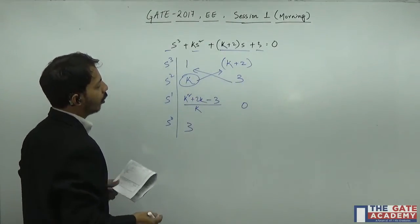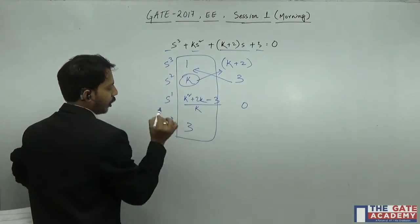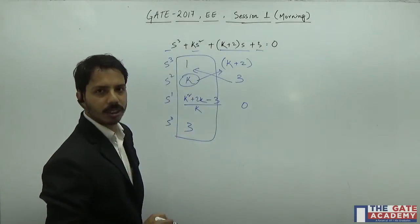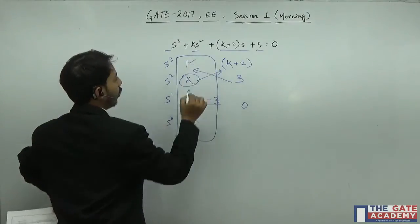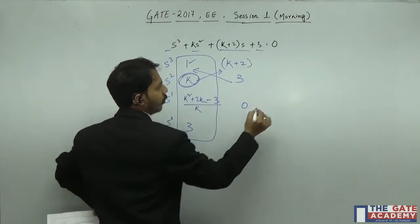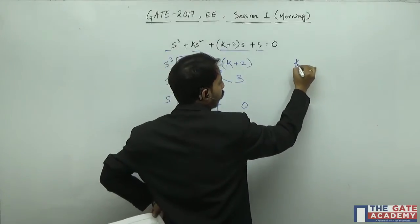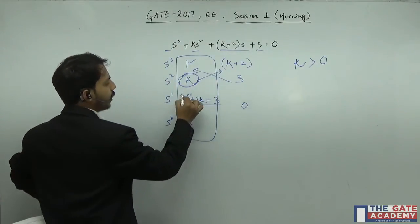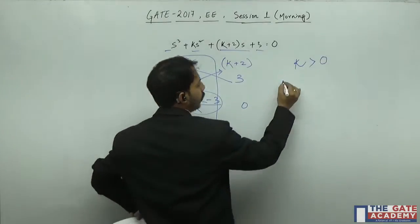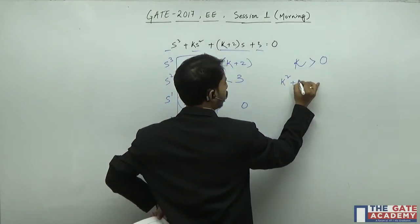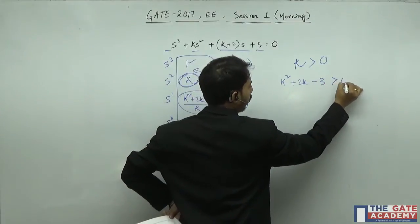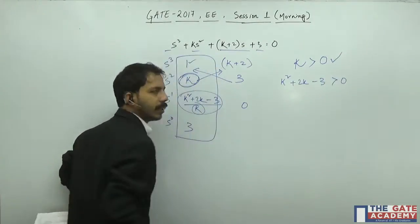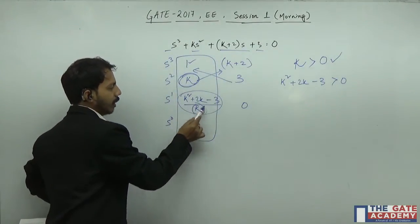For the system to be stable, there should be no sign change in the first column of the R-H table. The first entry is positive. The second entry k must be positive, so the first condition is k > 0. The third entry (k²+2k−3)/k must also be greater than 0. Since k > 0, we can ignore the denominator and require k²+2k−3 > 0.